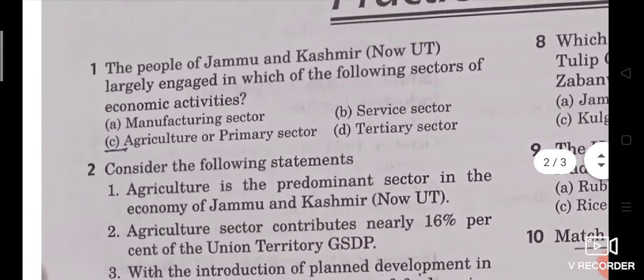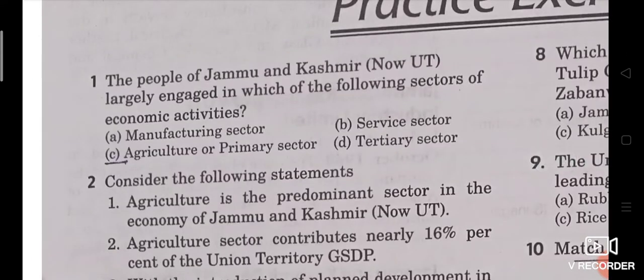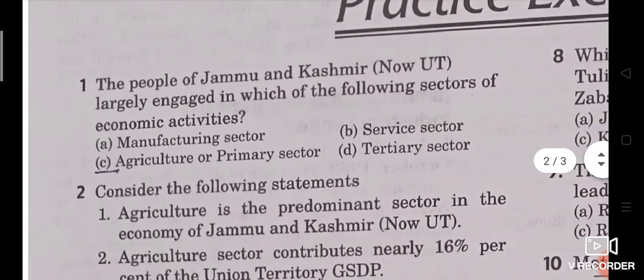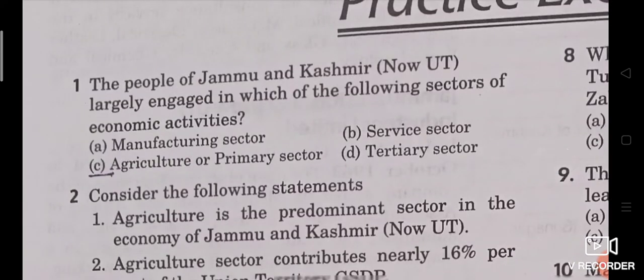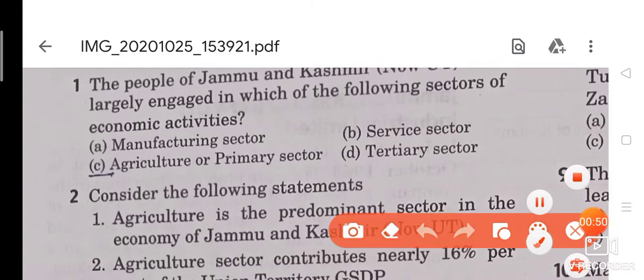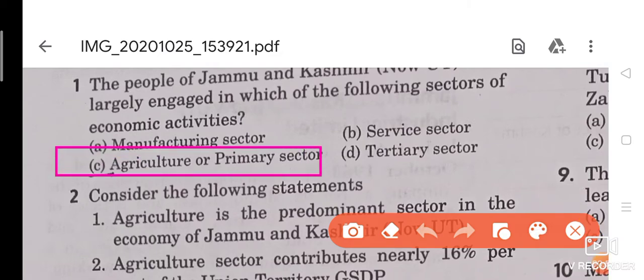Question 1: The people of Jammu and Kashmir, now union territory, are largely engaged in which of the following sectors of economic activities? The answer is Agriculture, or the primary sector.